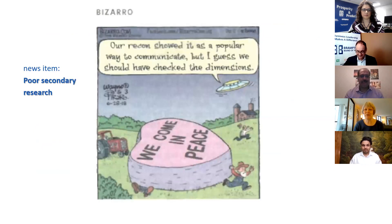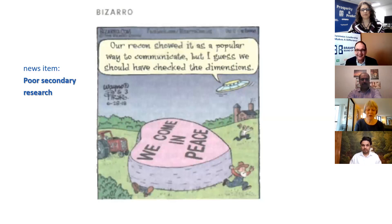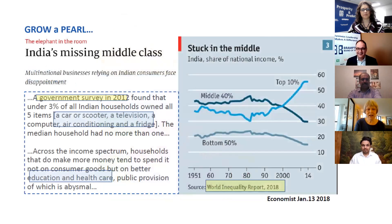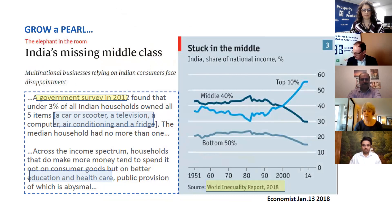Maggie describes 'raiding the pantry' — using a trusted publication like The Economist to find additional data. For example, The Economist found a survey from India dating to 2012 but updated it using the World Inequality Report from 2018. This also brings us to market entry, where other government agencies help: primary research tests your experience, and the primary research 'tree' to shake to find who will take you into a new market is Ontario's Trade Calendar.